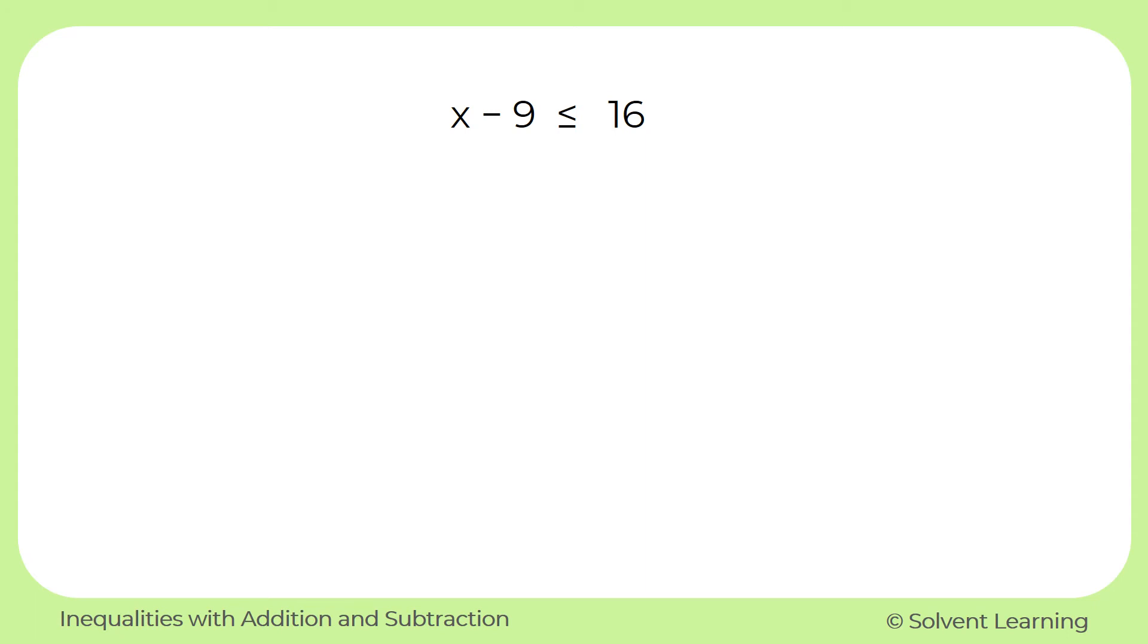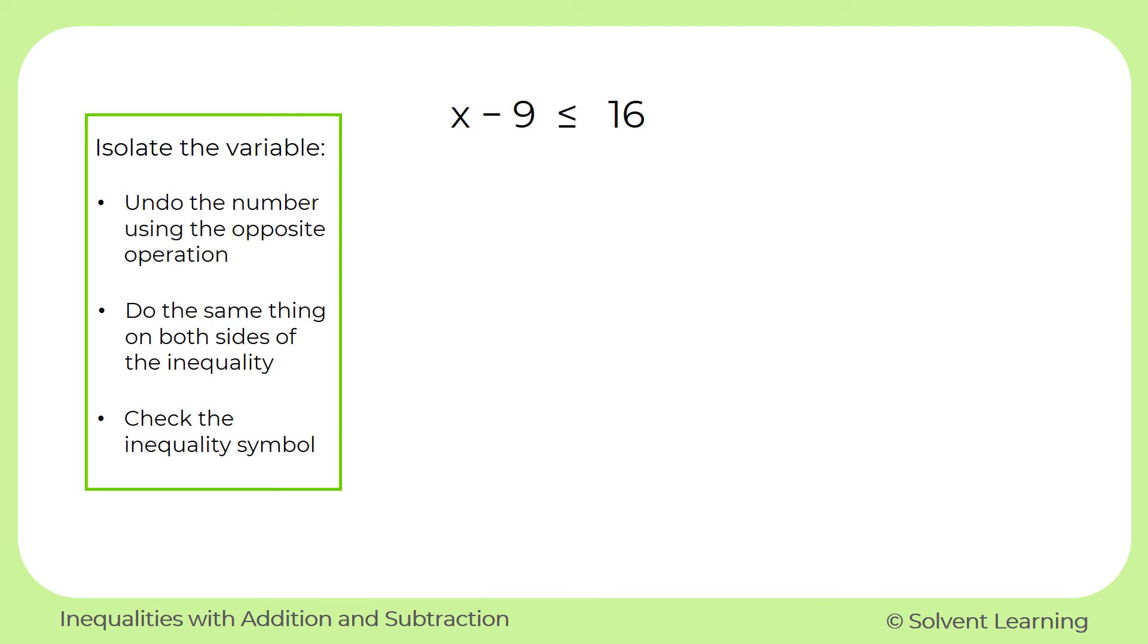Our next example is x minus 9 is less than or equal to 16. And our steps for solving this are going to be the same as before. We want to isolate the variable. And once we've done that, we want to check to make sure that we have the correct symbol in our answer.